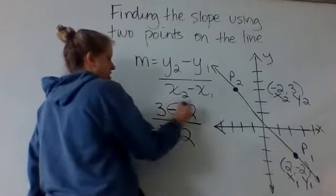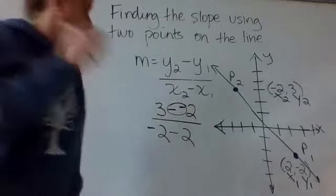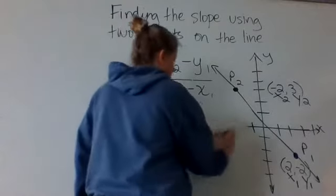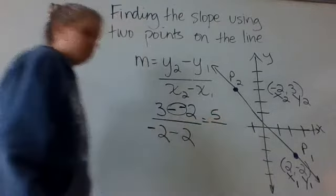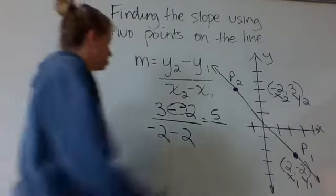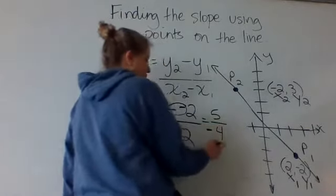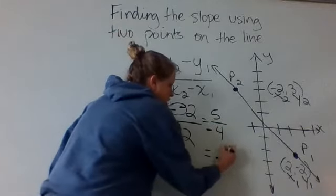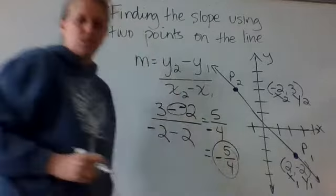Do this math and that's going to give you the slope of the line. Remember, when you see minus and negative, that really means three plus two, so that gives you five. Negative two minus two gives you negative four. So you have a positive over a negative, which just means your slope is negative five fourths.